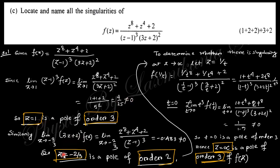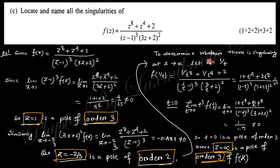Similarly, putting z = −2/3, this limit is also not equal to zero, so z = −2/3 is a pole of order two. Therefore: z = 1 is a pole of order three, and z = −2/3 is a pole of order two.